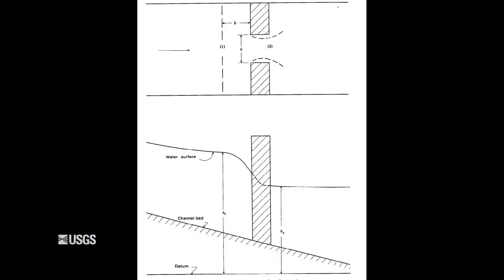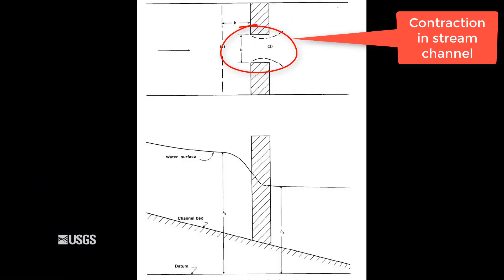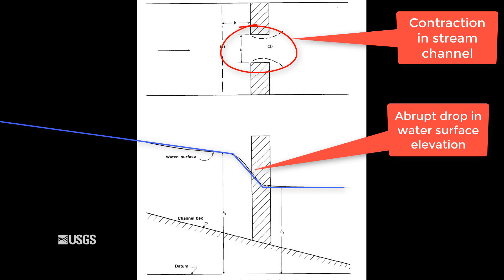A contracted opening measurement is possible when there is a contraction of a stream channel, most often a roadway crossing like a bridge, that creates an abrupt drop in water surface elevation between an approach section and the contracted section.